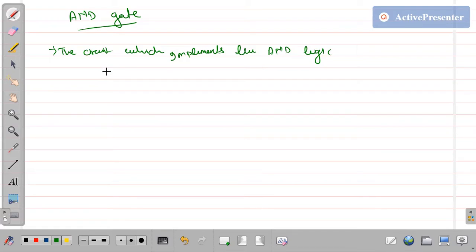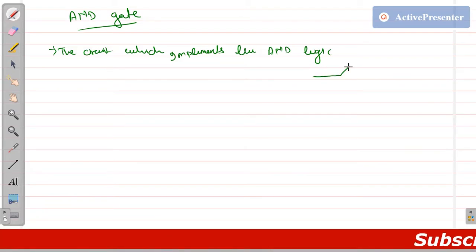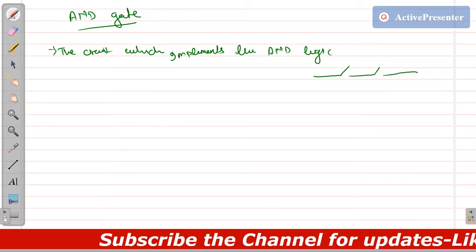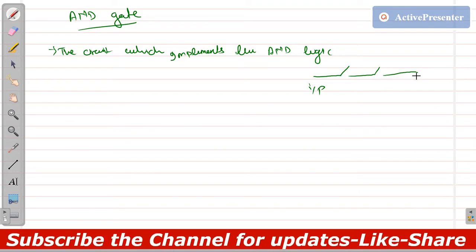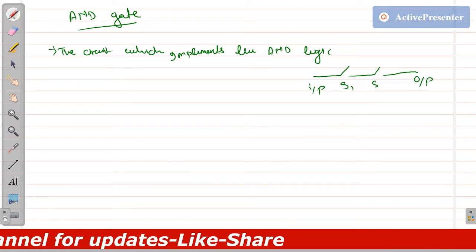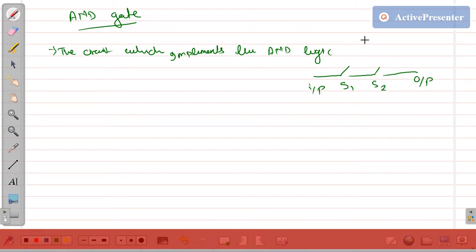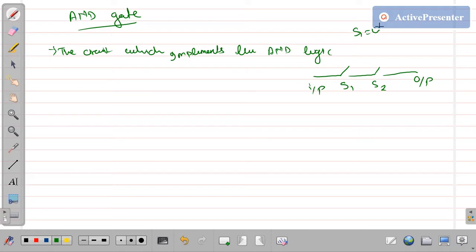AND logic in layman's terms means: suppose you want to say something is possible if this AND that are done. Consider a circuit where inputs are taken from one side and output from the other side, with switches S1 and S2. As discussed in the previous lecture, S1 equals 0 if the switch is open — it will not pass any signal. S1 equals 1 if it is closed — it will pass the signal.